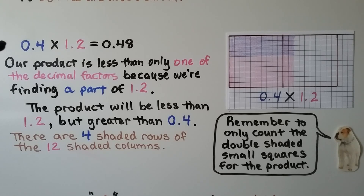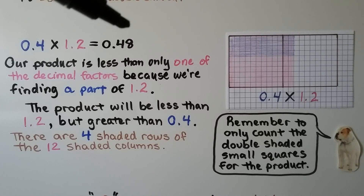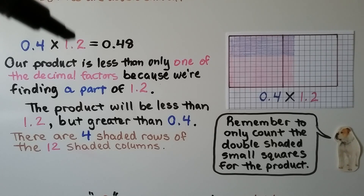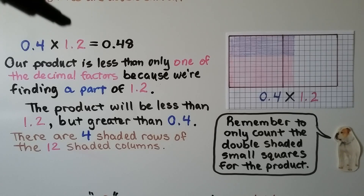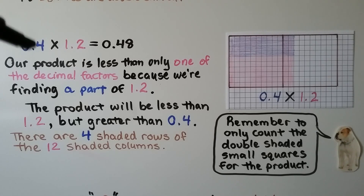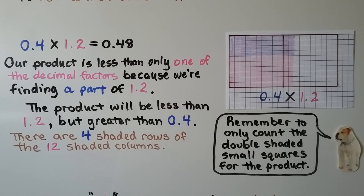Our equation was 4 tenths times 1 and 2 tenths, and it equals 48 hundredths. Our product, 48 hundredths, is less than only one of the decimal factors because we are finding a part of 1 and 2 tenths. The product will be less than 1 and 2 tenths but greater than 4 tenths. There are 4 shaded rows of 12 shaded columns. Remember to only count the double-shaded small squares for the product.